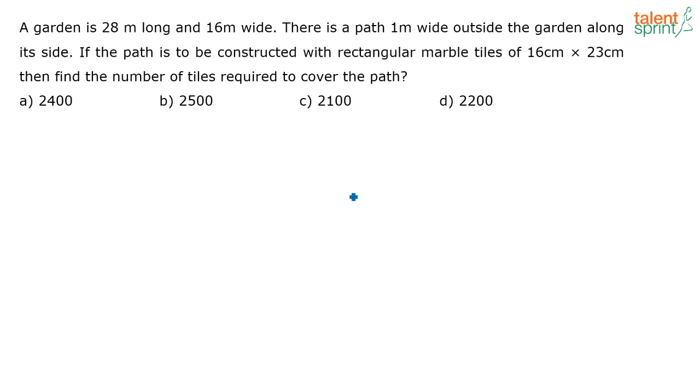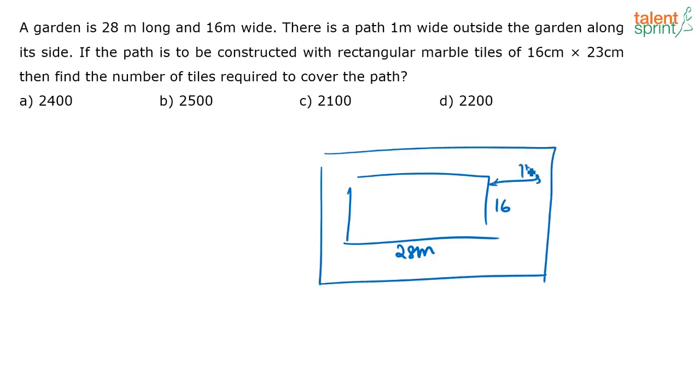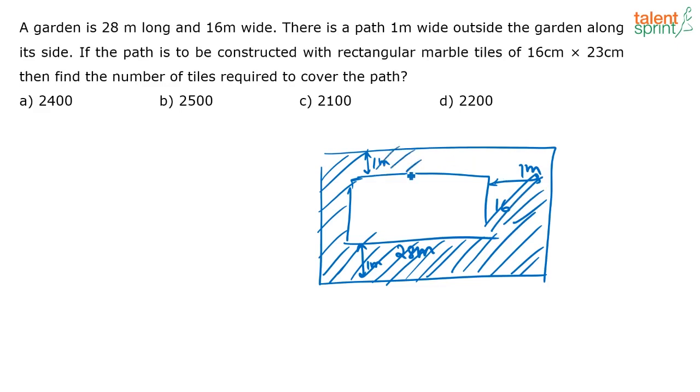So what is given here? There is a garden which is 28 meter long and 16 meters wide. On the outside of the garden there is a 1 meter path. So this is 1 meter, this is also 1 meter, this is also 1 meter. Now you have to put marble tiles in this shaded area and the tiles dimensions are given in centimeters. You have to find out how many tiles are required. So this is the shaded area where you have to put tiles.